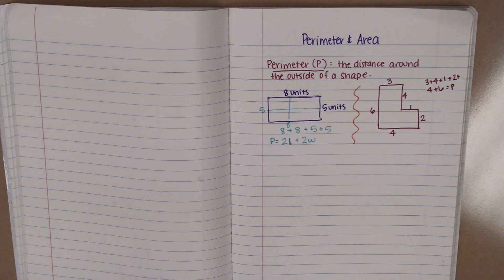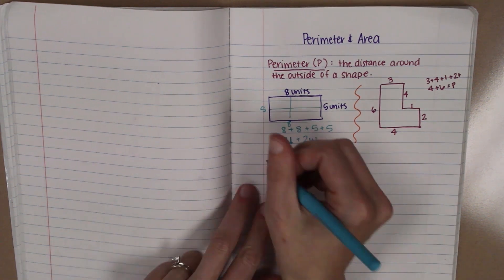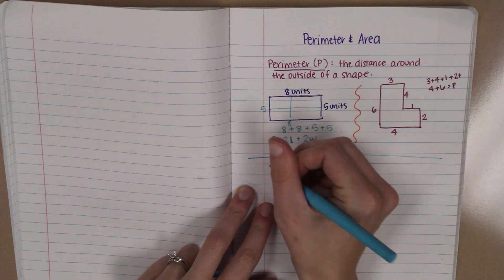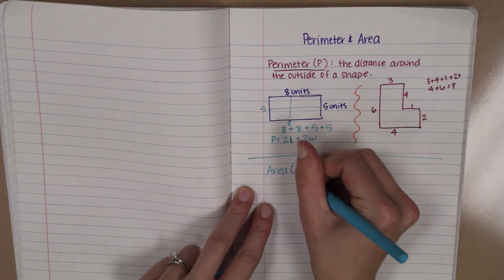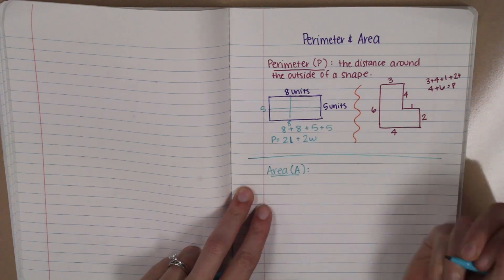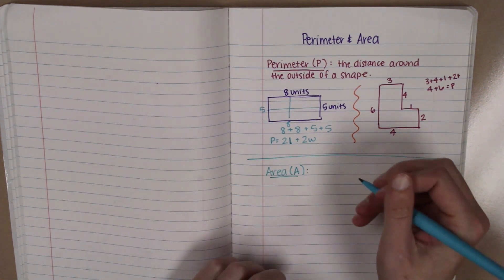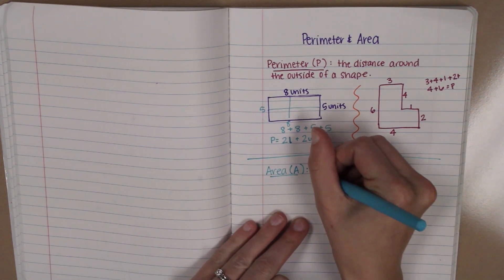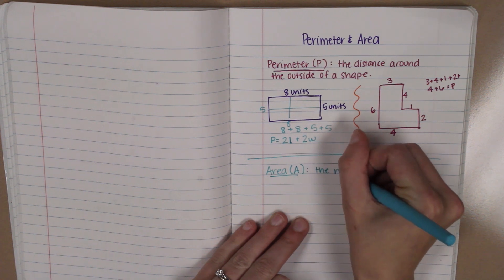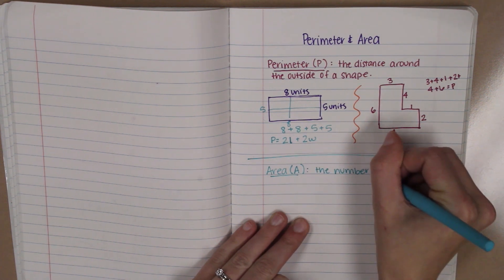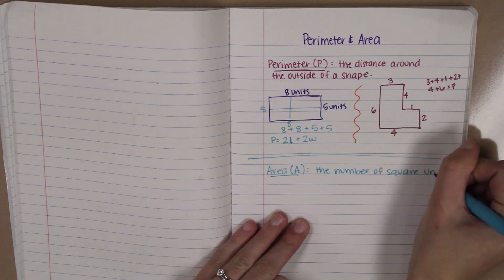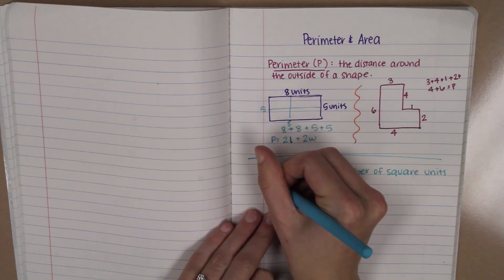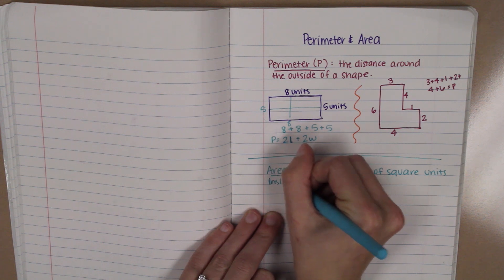Okay. Let's split our page in half here. Sometimes abbreviated with capital A. This is going to be the number of square units inside of a shape. The number of square units inside the shape.